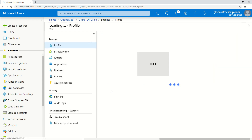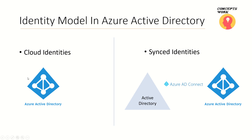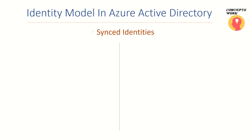A cloud account shows Source as Azure Active Directory, whereas an account synced from on-premises shows Windows Server for Azure AD. There are two types of identity models: cloud identities and synced identities. Synced identities are created when you set up Azure AD Connect and sync your on-premises users to Azure Active Directory — the users will have the same UPN, provided you have already verified your domain.